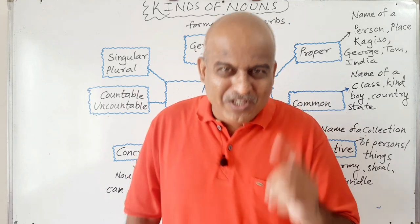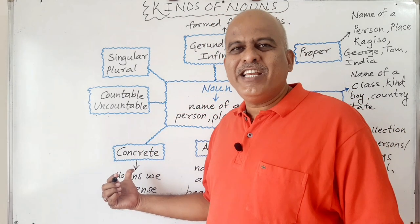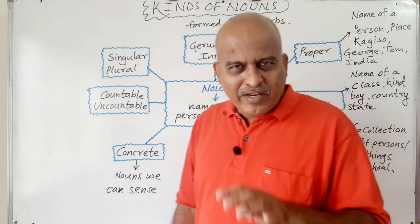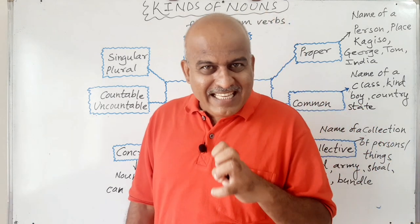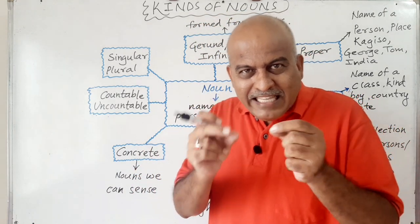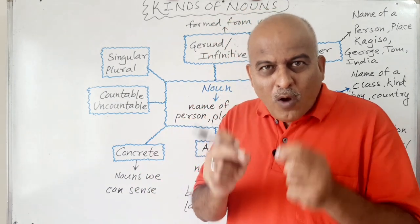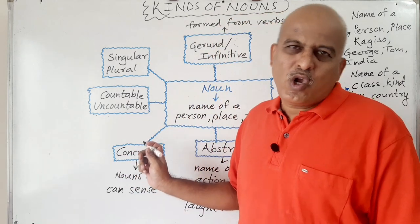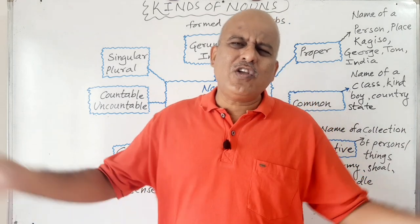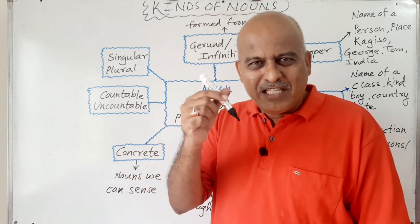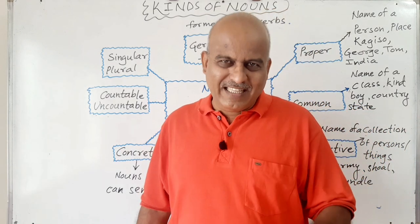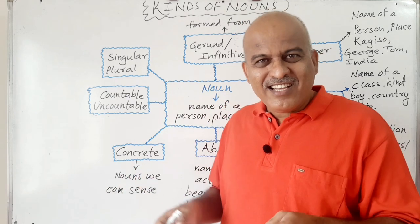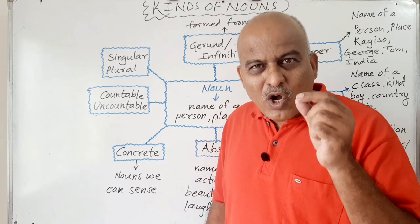Exactly opposite to the abstract nouns come concrete nouns. We can sense them — we can touch them, see them, taste them, or feel them. Those things, those places, those objects — if we can perceive them by our senses, then those are concrete nouns. For example, lots of things around us are concrete nouns: this pen, this whiteboard, that mobile phone, that fan. We can see it, touch it, or feel it — that is the concrete noun.